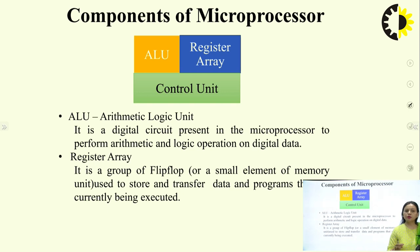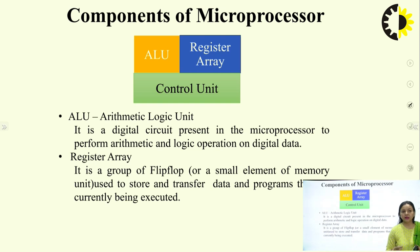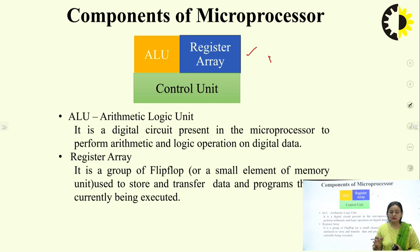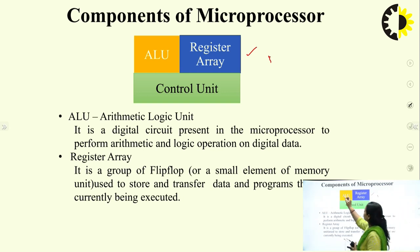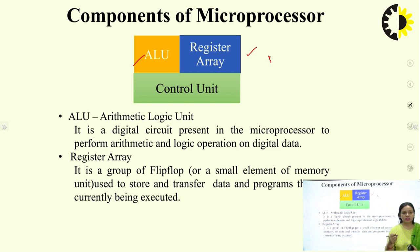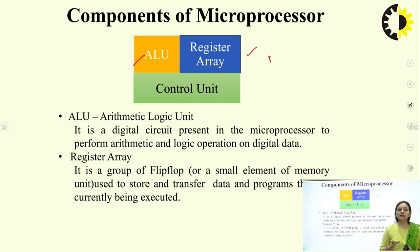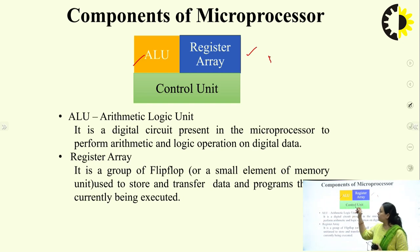The microprocessor is a clock-driven device fabricated with LSI or VLSI technology. It contains several registers and is a multipurpose, multiprogrammable device. It has a set of registers, an ALU which performs operations based on data stored in the register area, and since it is clock driven, it must have a control unit to synchronize its operations. The components of a microprocessor are divided into three parts: register array, arithmetic and logic unit, and a control unit.